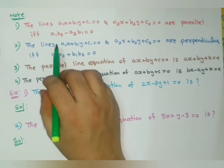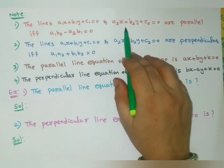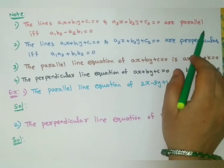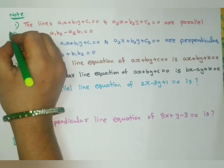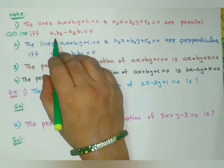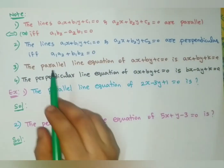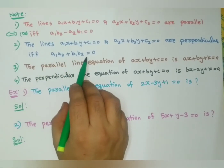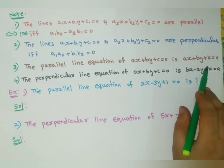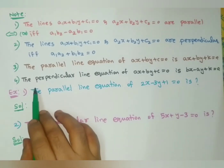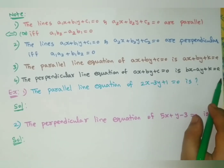To summarize: the lines a1x + b1y + c1 = 0 and a2x + b2y + c2 = 0 are parallel if and only if a1b2 - a2b1 = 0. The lines L1 = 0 and L2 = 0 are perpendicular if and only if a1a2 + b1b2 = 0. The parallel line equation of ax + by + c = 0 is ax + by + k = 0, and the perpendicular line equation is bx - ay + k = 0.